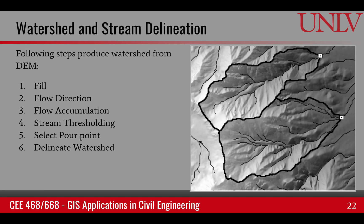Overall, the process of watershed and stream delineation includes: filling the gaps in the DEM (DEM conditioning), then finding flow directions, then using flow directions to find flow accumulations, then thresholding the flow accumulations to get streams, then selecting a pour point on the stream, and finally creating a watershed for that pour point.